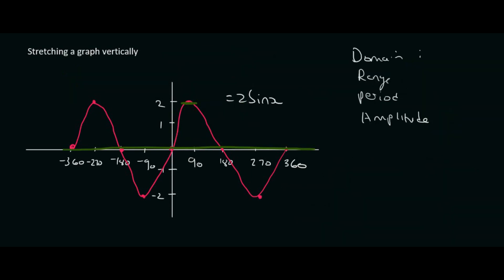And so as always, let's go through the domain, range, period, and amplitude. The domain is your x values, which in this case is going from minus 360 up to 360. The range is the y values. So we say y is an element going from minus 2 up to positive 2.